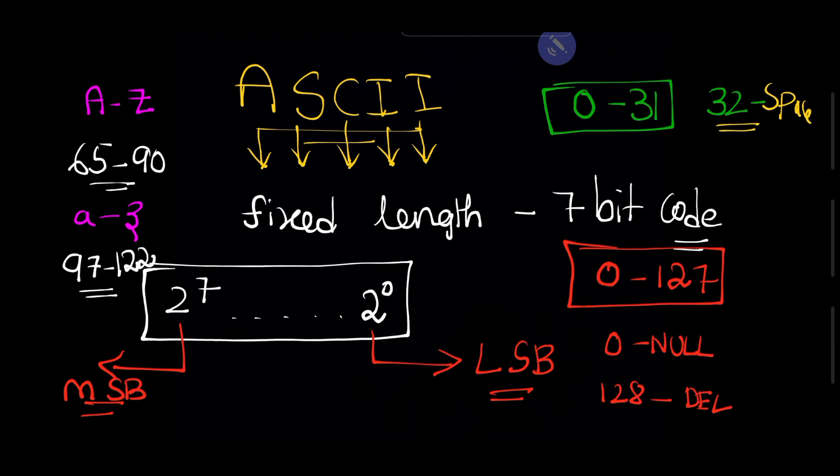Small a ASCII code is 97 and goes up to 122. So every character, every special symbol, every number contains some kind of code and that code is called ASCII code.